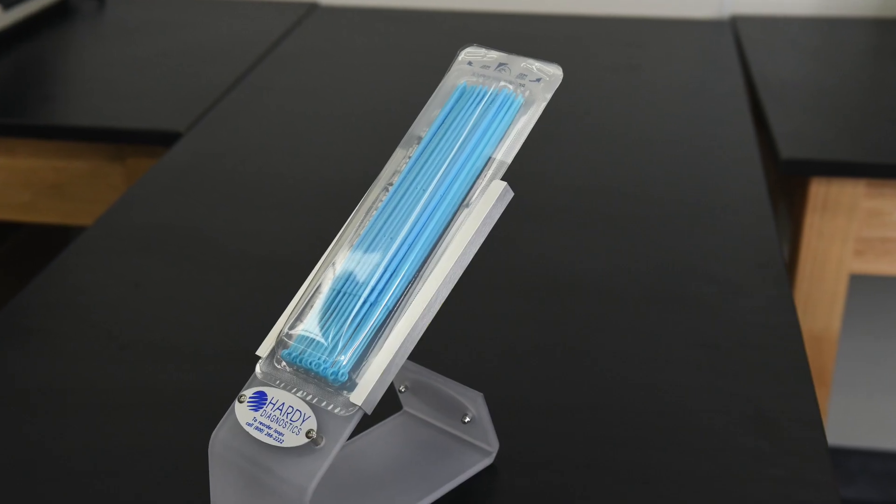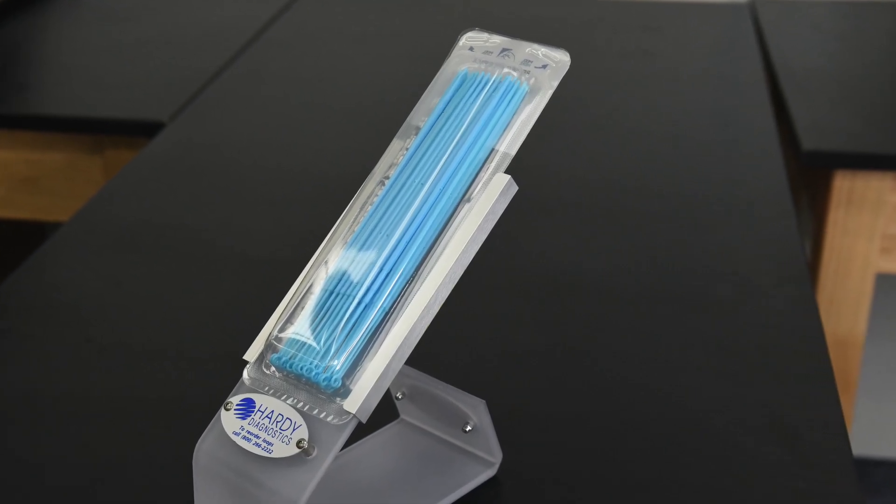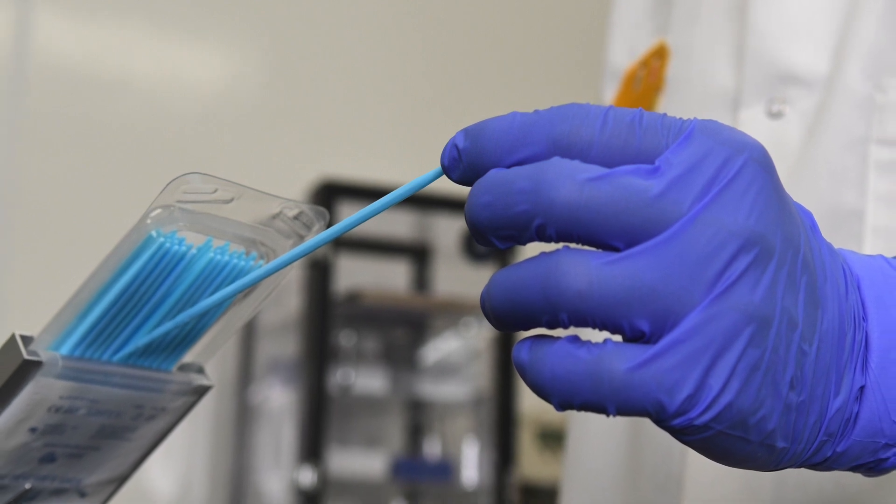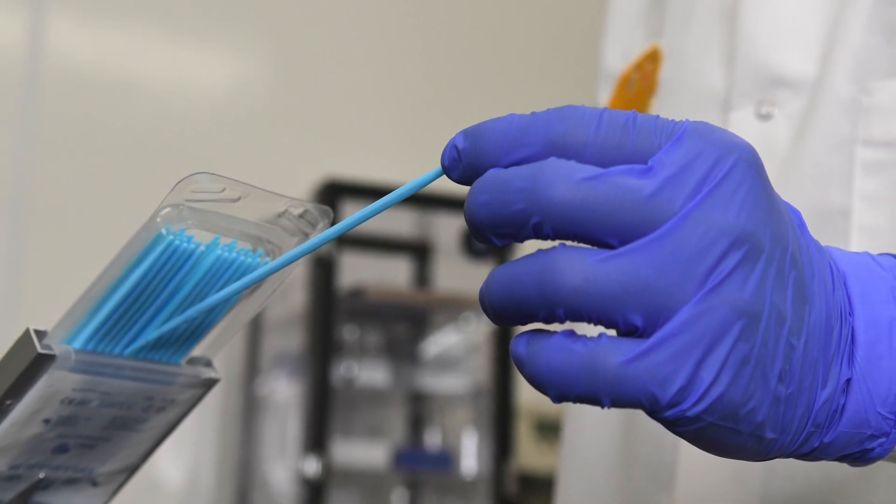The loop handles remain covered on top to reduce airborne contaminants. The Loop Caddy eliminates the laborious task of opening and closing loop containers each time a loop is needed.